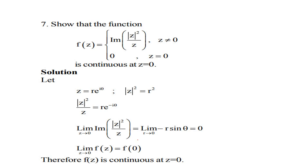Now, show that the function f(z) = Im(|z|²) / z for z ≠ 0, and f(0) = 0 for z = 0, is continuous at z = 0. We use the polar form z = r·e^(iθ), where r is the modulus and θ ranges from 0 to 2π. Then |z| = r, so |z|² = r². Thus |z|²/z = r² / (r·e^(iθ)) = r·e^(−iθ).